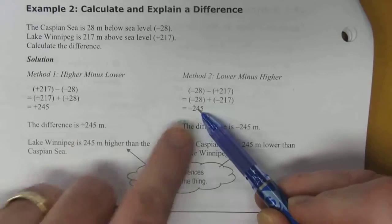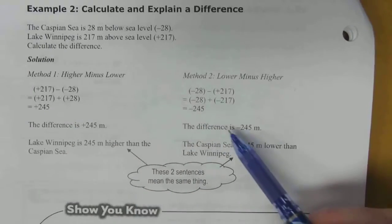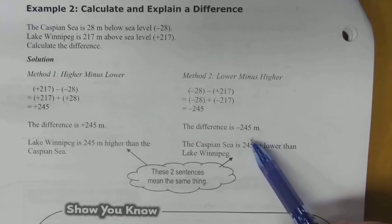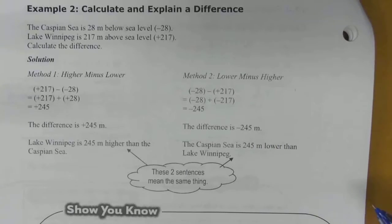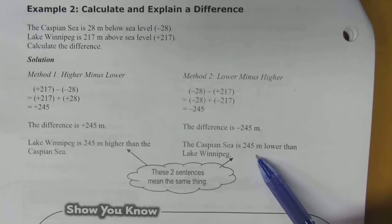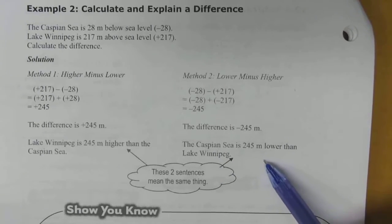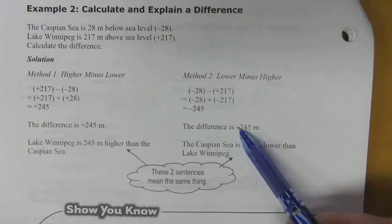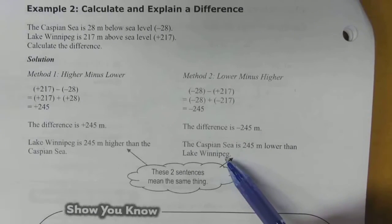Again, the magnitude is the same, but we have a different sign. So in this case, the difference is negative 245 meters. When you get that answer, you look at the situation and say, okay, well, the Caspian Sea then is 245 meters lower, that's where the negative comes in, than Lake Winnipeg.